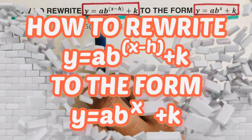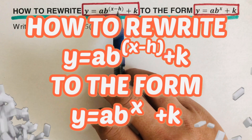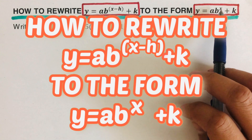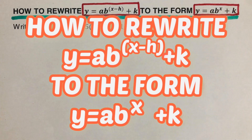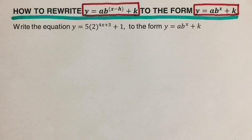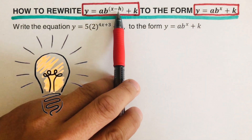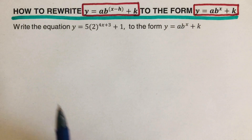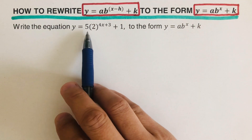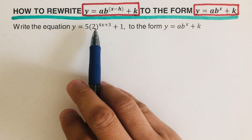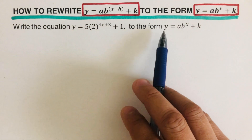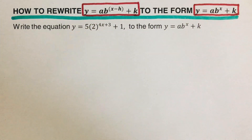Hello everyone. In this video we are going to rewrite y equals ab raised to the power x minus h plus k to the form y equals ab raised to the power x plus k. Notice the difference between these two general forms — the first one has an h while the other one does not. Let's take this first example: write the equation y equals 5 times 2 raised to the power 4x plus 3, plus 1, to the form y equals ab to the power x plus k.